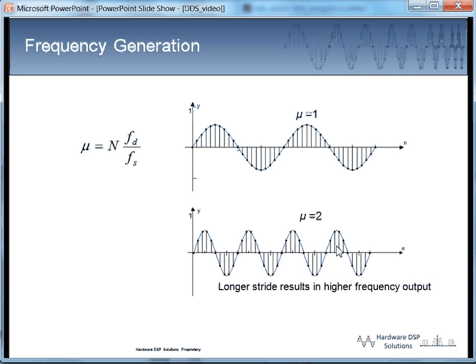So as a very simple example, if we had a phase word of 1, we would be hitting every value in the table, which would give us a very oversampled sine wave. If we just simply increase that to 2, we would be hitting every other sample in the lookup table, which would increase the sinusoid frequency by 2 on the output. The phase word, mu, is controlled by the table size or the frequency that we desire divided by the sampling frequency and then the table step size.